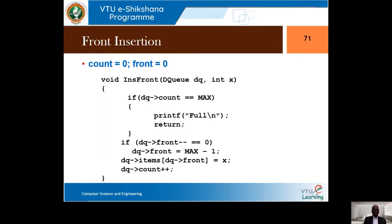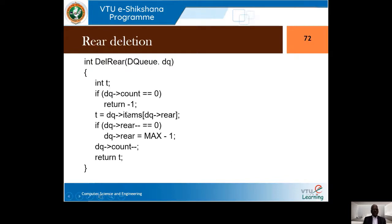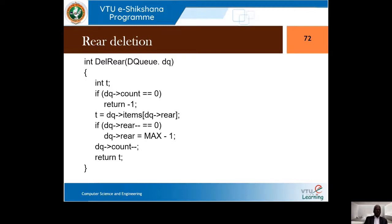Rear deletion is the other new function. Similar logic applies: if rear is zero, it wraps around. Otherwise, rear is decremented. The element pointed to by rear is saved in a temporary variable and returned. Since we are deleting an element, count is decremented. These are the two new functions added to the double ended queue.